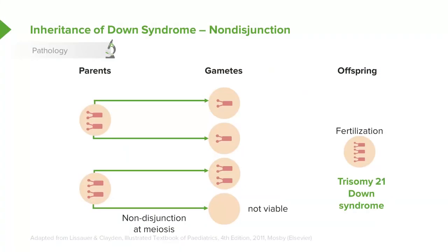So how does this happen? The most common cause, about 94% of the time, is non-disjunction. Basically, one parent creates two normal gametes, and the other parent creates one gamete with two copies while the other isn't viable. Through a freak occurrence, the gamete with two copies fertilizes a normal egg, or the egg has two copies and is fertilized by normal sperm, resulting in a patient with three copies of the 21st chromosome.